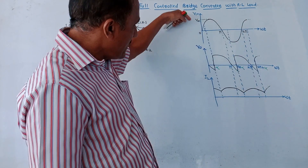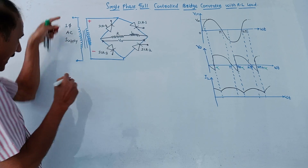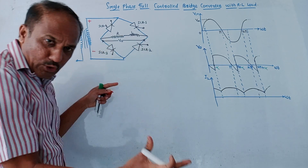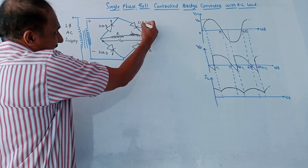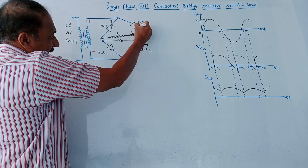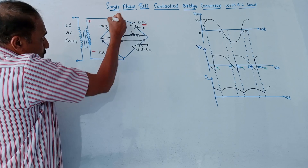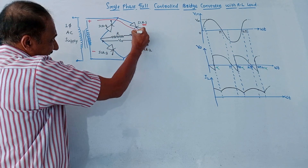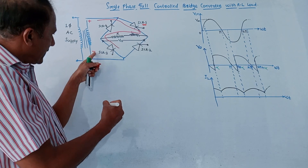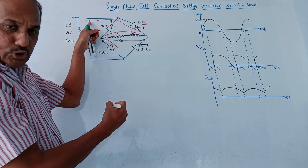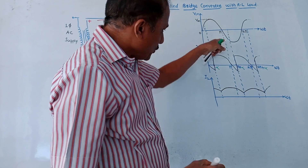During the positive half cycle (0 to π), the input terminal polarity is plus/minus, so SCR1 is forward biased and SCR4 is reverse biased. Current flows through SCR1, then through the load, then through SCR3, because SCR3's cathode is connected to the negative of the transformer and the positive is connected through the load to the positive of the transformer. This is the current flow path during the positive half cycle.